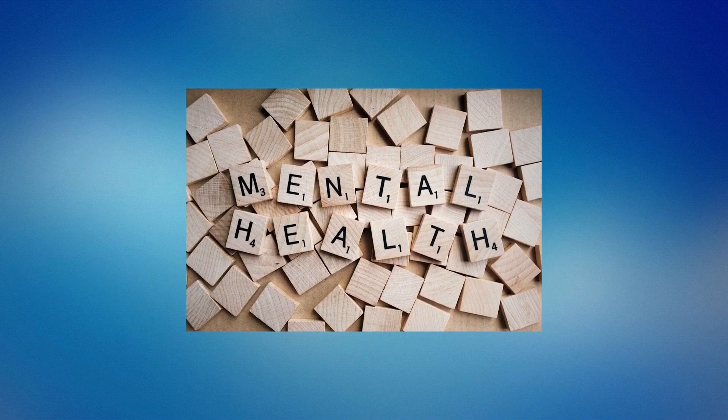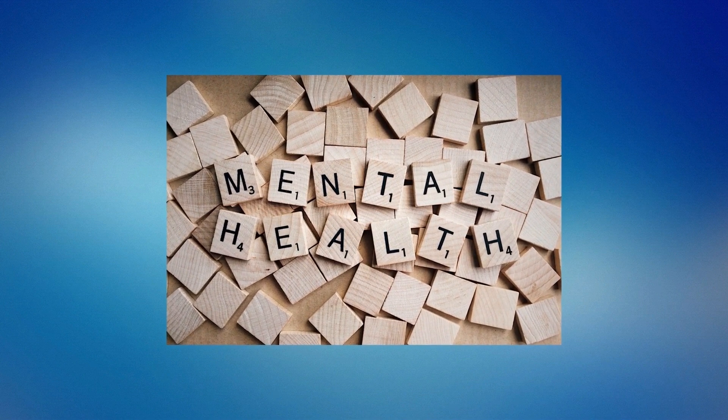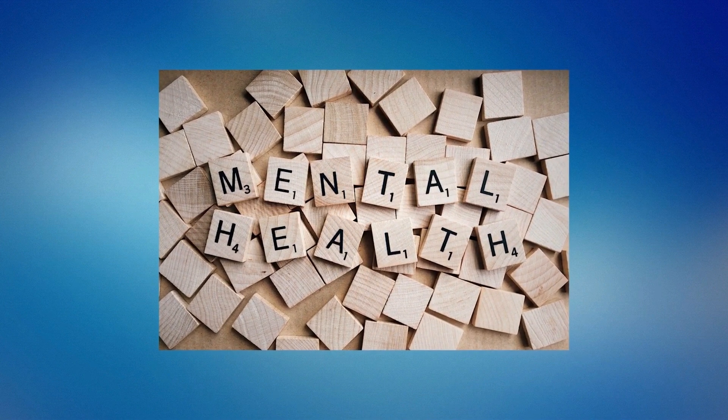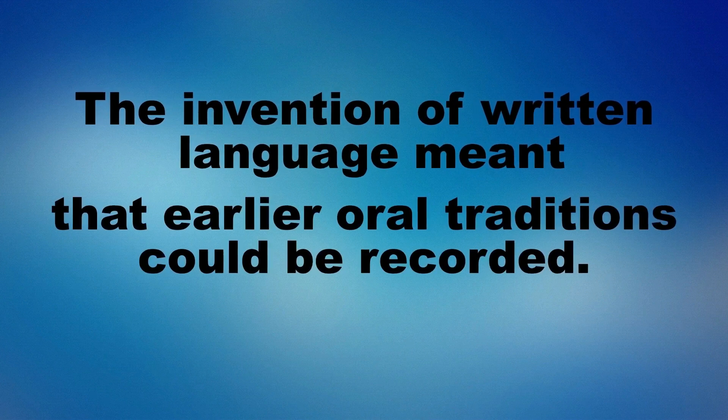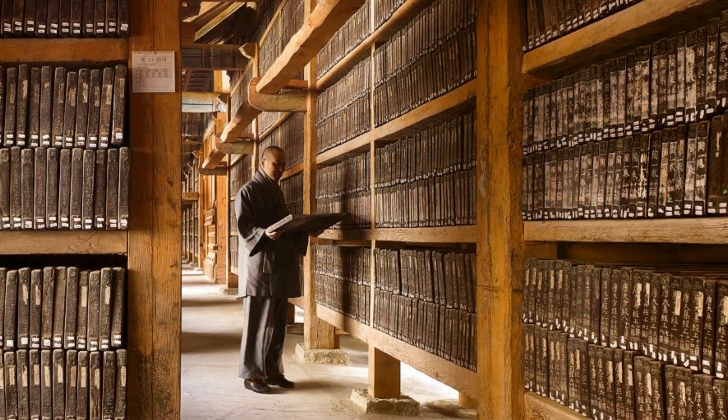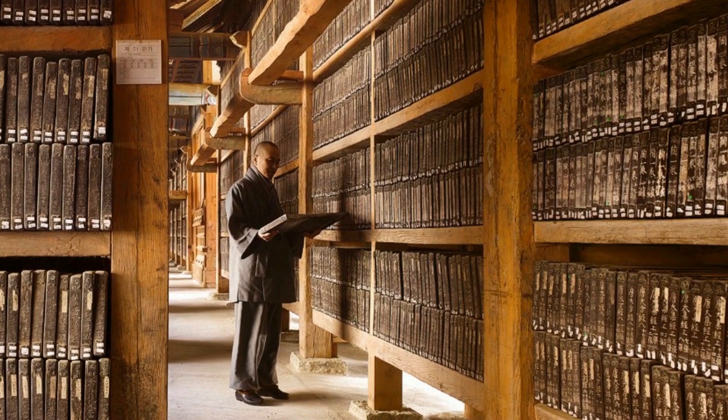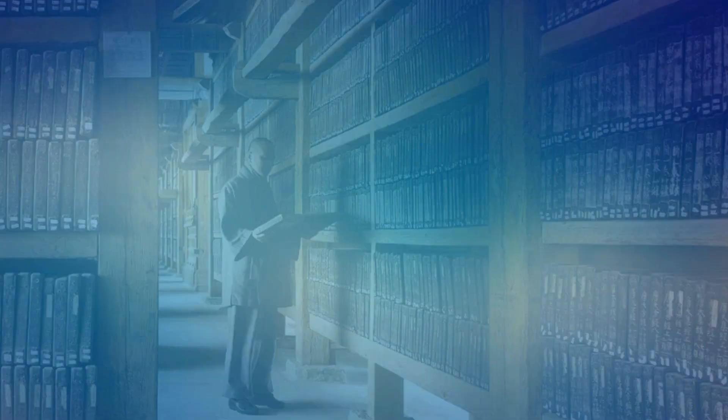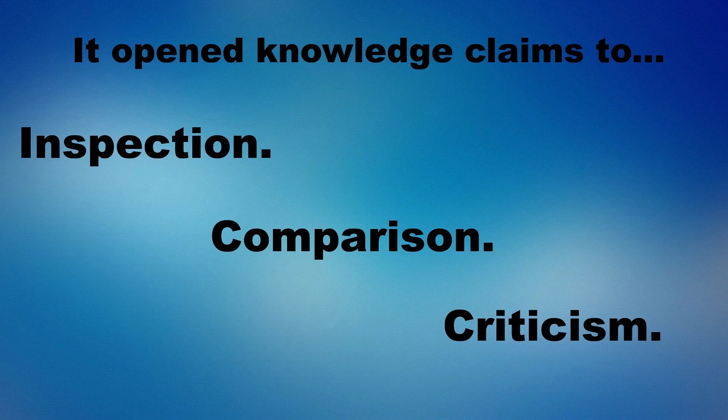This made it possible for people to write down everything they could say. It should be mentioned that a fully alphabetic language like the one we have today was first developed in Greece in around 800 BC. The invention of written language meant that earlier oral traditions could be recorded, and thereby making it possible for the creation and storage of large amounts of information that earlier had relied solely on memory. It had a revolutionary effect since it opened knowledge claim to the possibility of inspection, comparison and criticism, impossible in oral cultures.